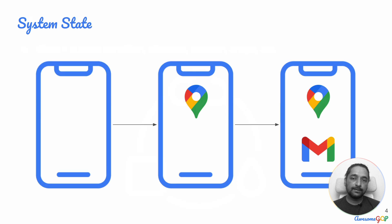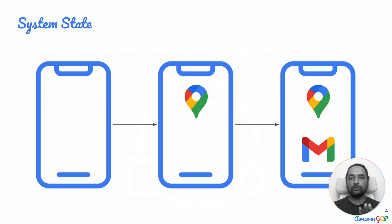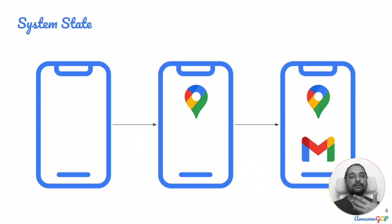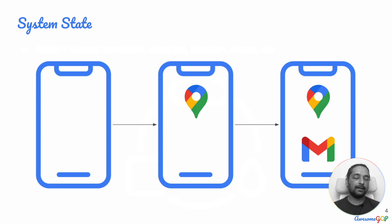In the same way, systems have state. For example, when you get a new mobile phone, there's nothing installed on it — that is a state. When you perform the action of installing an application, its state changes to also include that application. And when you install yet another application, it changes state again.